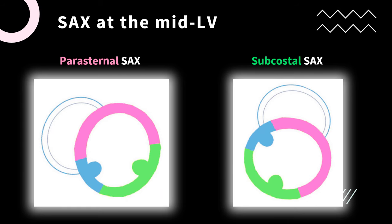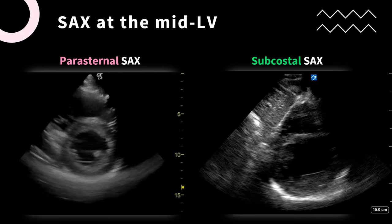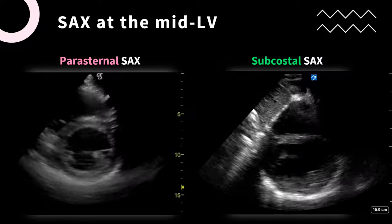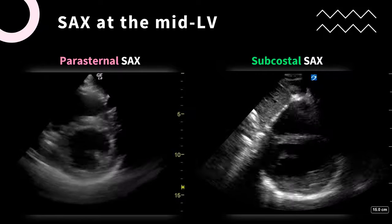Here's a comparison between the two short axis views of the heart. In the parasternal short axis view, your RV is going to be on the top left of the screen. But in the subcostal view, the RV moves to the top or even the top right of the heart. Notice the liver is also visible in the subcostal view. They are very similar views.